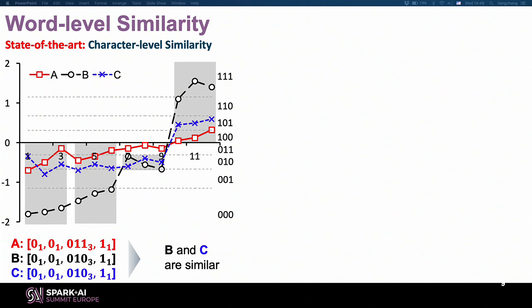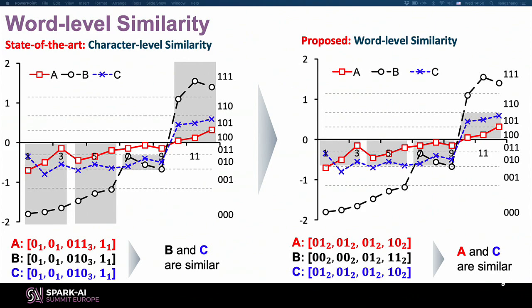So we propose a new method called word-level similarity. It's pretty simple: for each time series, the whole word uses the same cardinality, but the cardinality can change for the whole word. For example, it might use cardinality 2 for the whole word, and can also convert to cardinality 8 — but all segments must use the same cardinality. This allows us to capture the similarity that character-level methods miss.